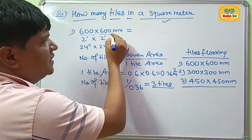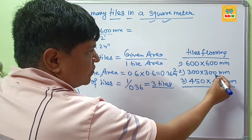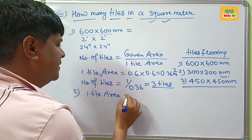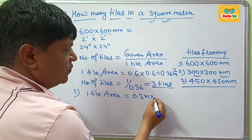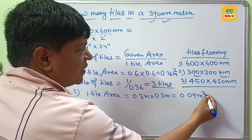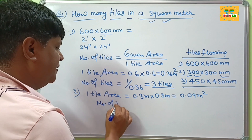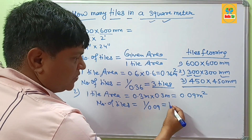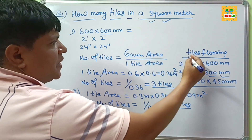If your tile size is 300 x 300 mm, find the one tile area in square meters. Converting to meters: 0.3 m x 0.3 m = 0.09 square meters. Number of tiles equals 1 divided by 0.09, which comes to approximately 12 tiles. So if you are using 300 x 300 mm tile size, you will need about 12 tiles per square meter.